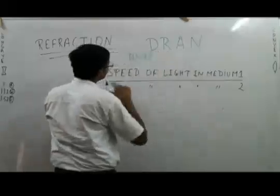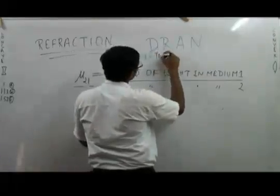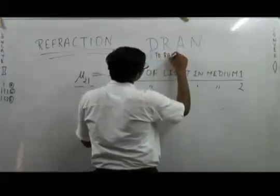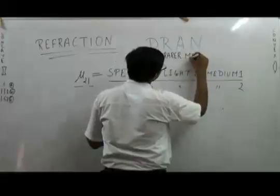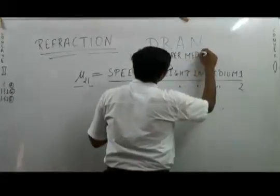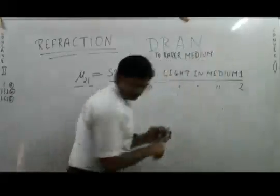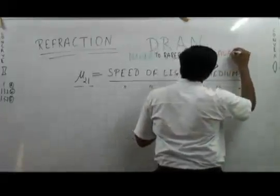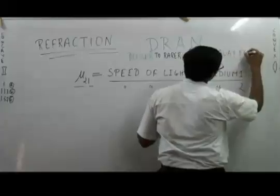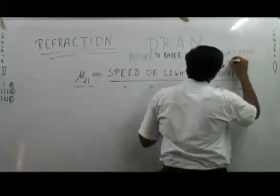When light travels from denser to rarer medium, it will go away from normal.